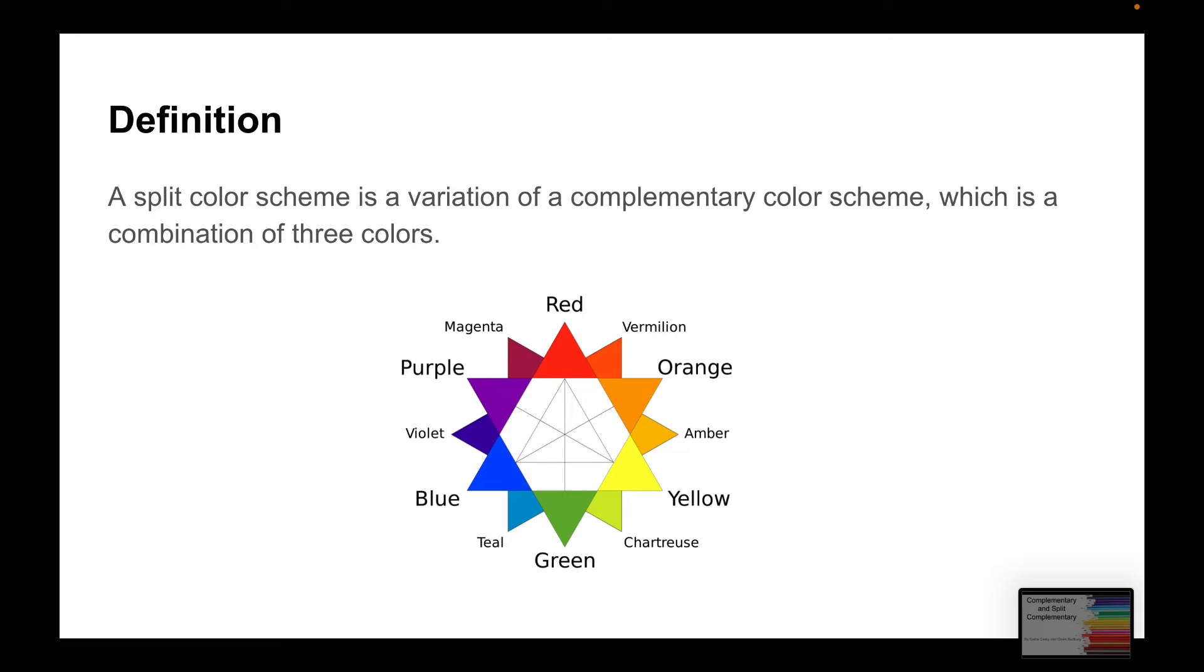Alright, so the definition of a split complementary color is a variation of complementary color scheme, which is a combination of three colors. So, as we have our little example here, the little cool star here, we see red is the primary color and the complementary color is green. But if I was going to use split complementary, then I would use the one to the left of green and the one to the right of green. So, it would be red, teal, and I believe it's chartreuse. So, that would be a good example of complementary and split complementary.